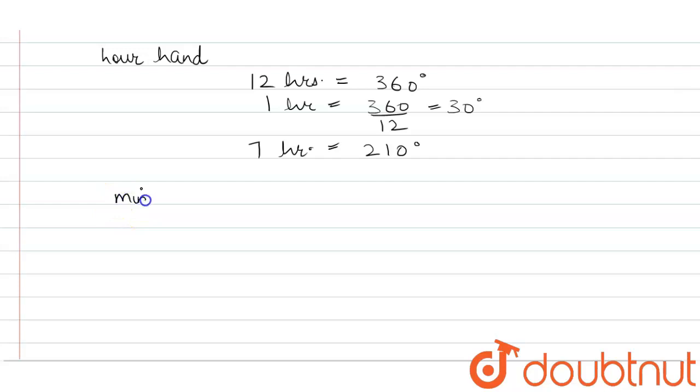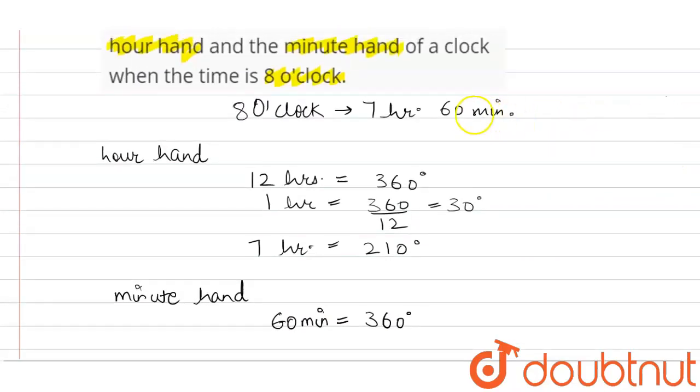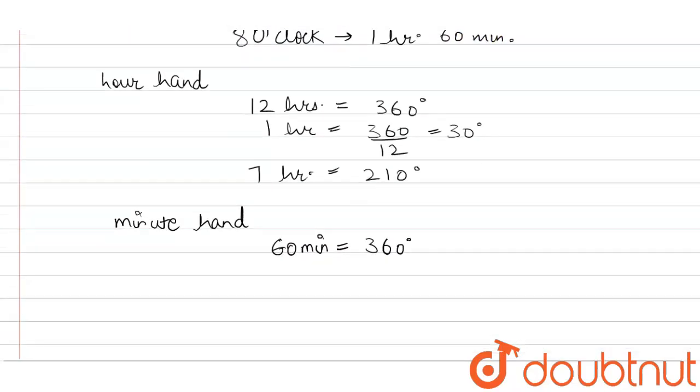Now it's time for the minute hand. For minutes, we know that in 60 minutes the minute hand will complete the circle. It completes the 360-degree round in 60 minutes. So we also have to find the angle for 60 minutes. The angle for 60 minutes is 360 degrees.